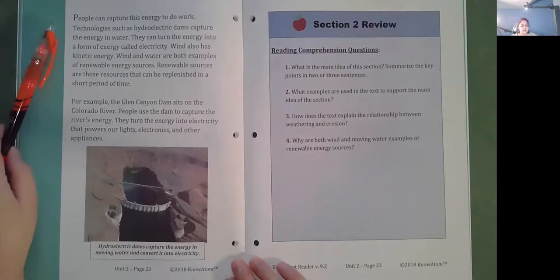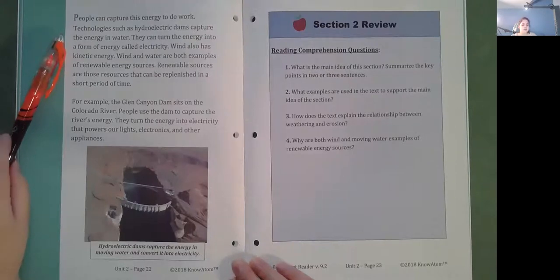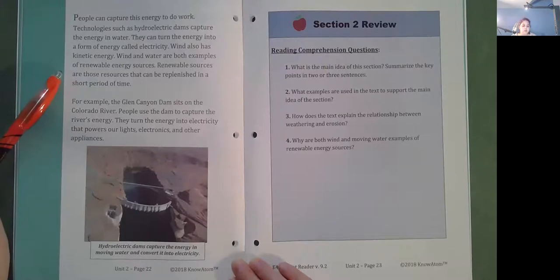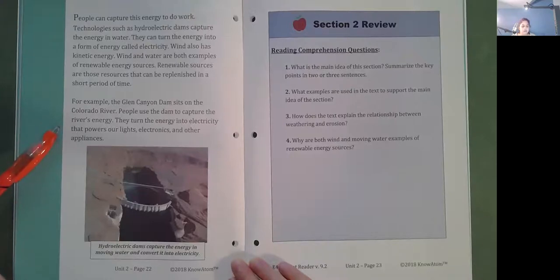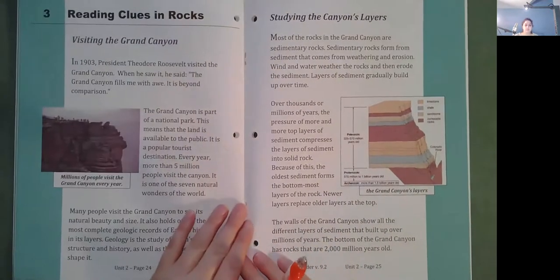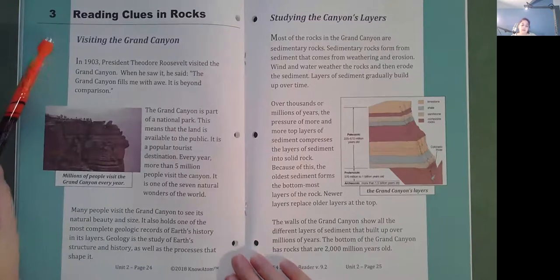People can capture this energy to do work. Technologies such as hydroelectric dams capture the energy in water. They can turn the energy into a form of energy called electricity. Wind also has kinetic energy. Wind and water are both examples of renewable energy sources. Renewable sources are those resources that can be replenished in a short period of time. For example, the Glen Canyon Dam sits on the Colorado River. People use the dam to capture the river's energy. They turn the energy into electricity that powers our lights, electronics, and other appliances.